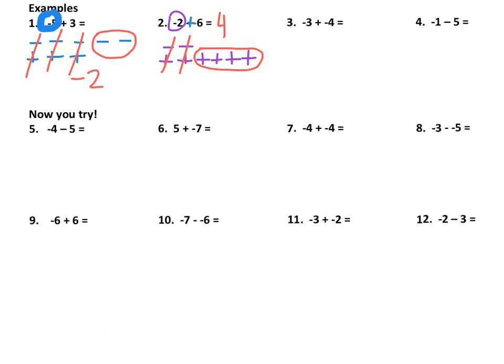In the next example, we have 3 negatives and we have 4 negatives. Now, since everything is negative, there's nothing that cancels. So since there's nothing that cancels, we're just going to count up what we have — 1, 2, 3, 4, 5, 6, 7 negatives. So the answer is negative 7.